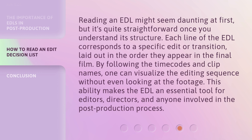Reading an EDL might seem daunting at first, but it's quite straightforward once you understand its structure. Each line of the EDL corresponds to a specific edit or transition, laid out in the order they appear in the final film. By following the timecodes and clip names, one can visualize the editing sequence without even looking at the footage. This ability makes the EDL an essential tool for editors, directors, and anyone involved in the post-production process.